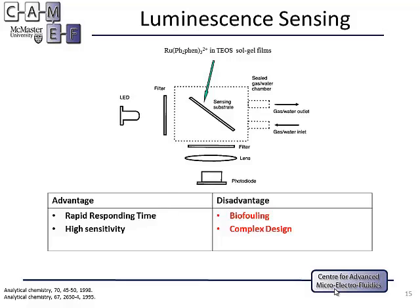The second one is the optical method. You have a membrane that is fluorescent and dissolved-oxygen sensitive. When you shine a light on it, it produces fluorescence detected by a detector underneath. When dissolved oxygen contacts the sensing film, it causes a quenching effect, and the quenching intensity is proportional to the dissolved oxygen concentration. This method is really sensitive and has a very quick response time. However, because of the complicated optical design, the cost is really high, and because the sample directly contacts the sensing film, biofouling is almost unavoidable.